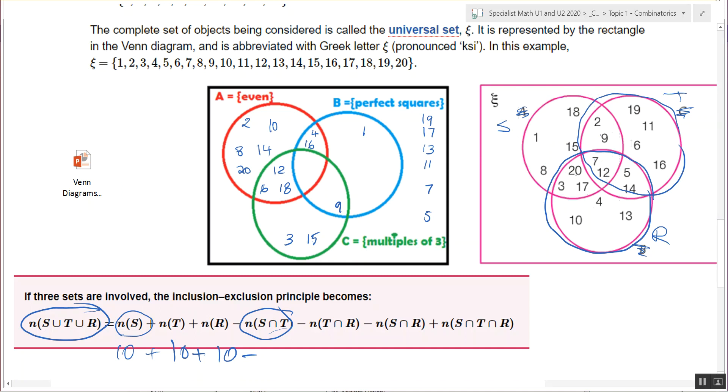So where S and T intersect. So how many numbers are there where S and T intersect? Four. Very good. How many numbers where T and R intersect? Four. How many where S, T and R intersect? How many in there? In the very middle bit.